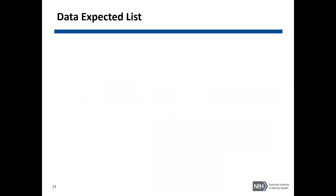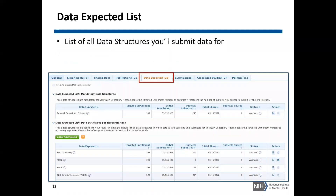The data expected list is the list of all data structures that you'll submit data for. Access to edit the data expected list is provided to those with admin permissions to the NDA collection. Your PI can provide you these permissions via the permissions tab of the NDA collection.